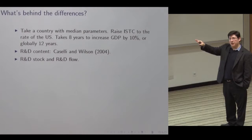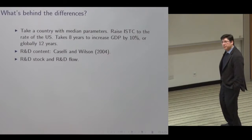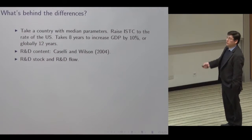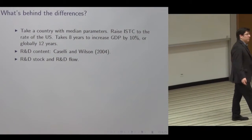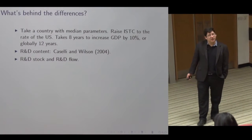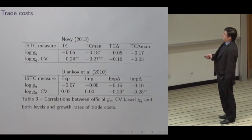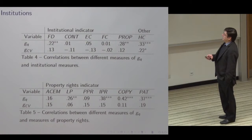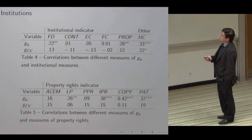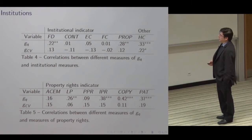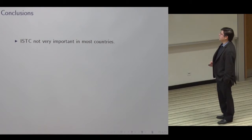These differences are important. If you take a country with median values of all the parameters and raise their ISTC to the rate in the United States, that country would have a growth rate leading its GDP to rise by 10% in eight years. If you do it to all countries in our sample and average by GDP, it's 12 years. We're not saying there's necessarily some way to raise the rate of ISTC, but this shows these differences are important. At the end we look at trade cost levels and changes and some institutional variables to get a sense of correlates to what we're finding.